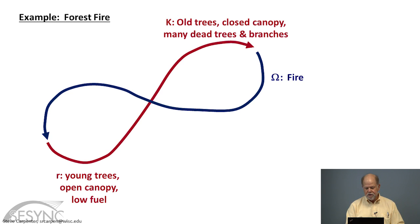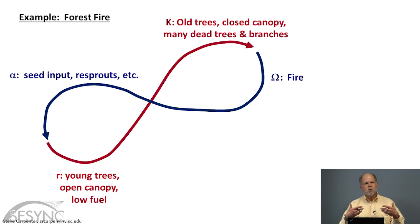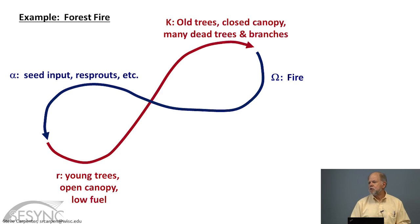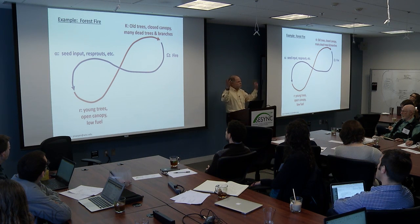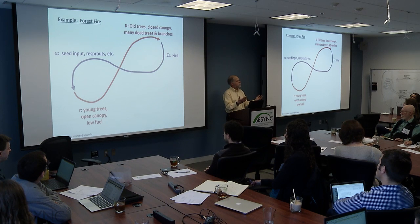But eventually a reorganization begins. That can come from sprouts of roots from root stocks of plants that were there before, from seed input, seed rain from neighboring sites, any number of sources. So ecological succession is a kind of simple example you can think about to remember the adaptive cycle.